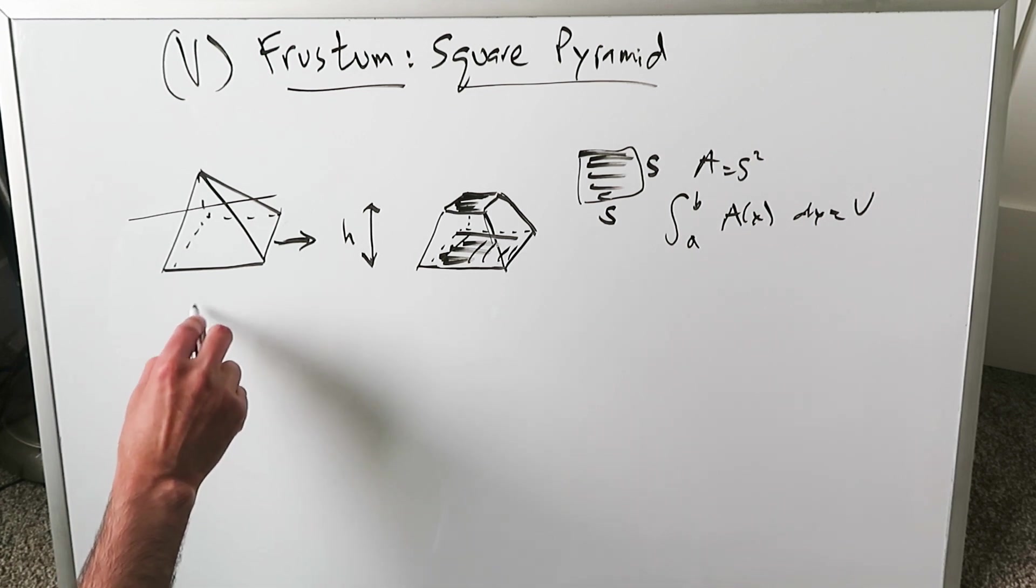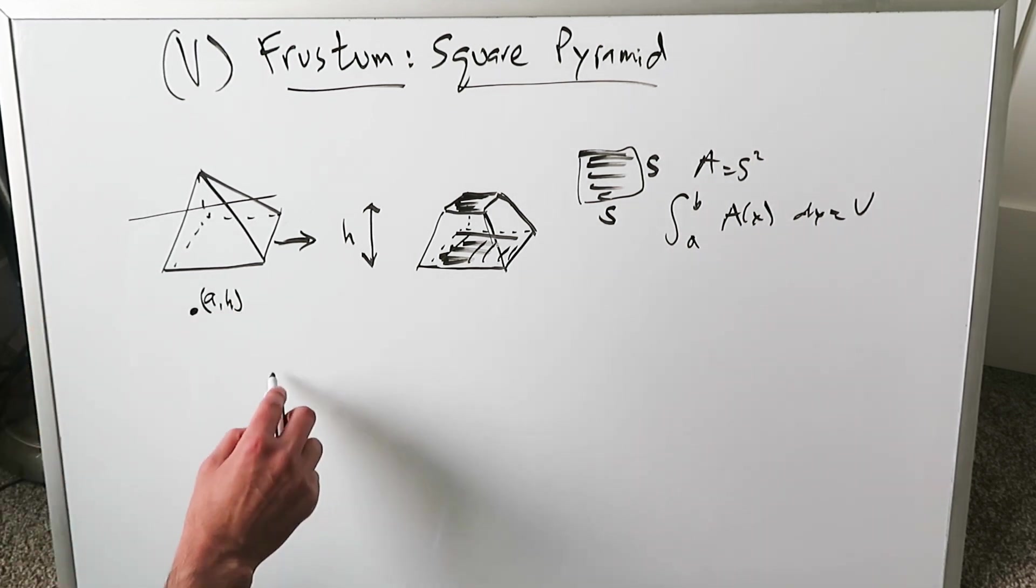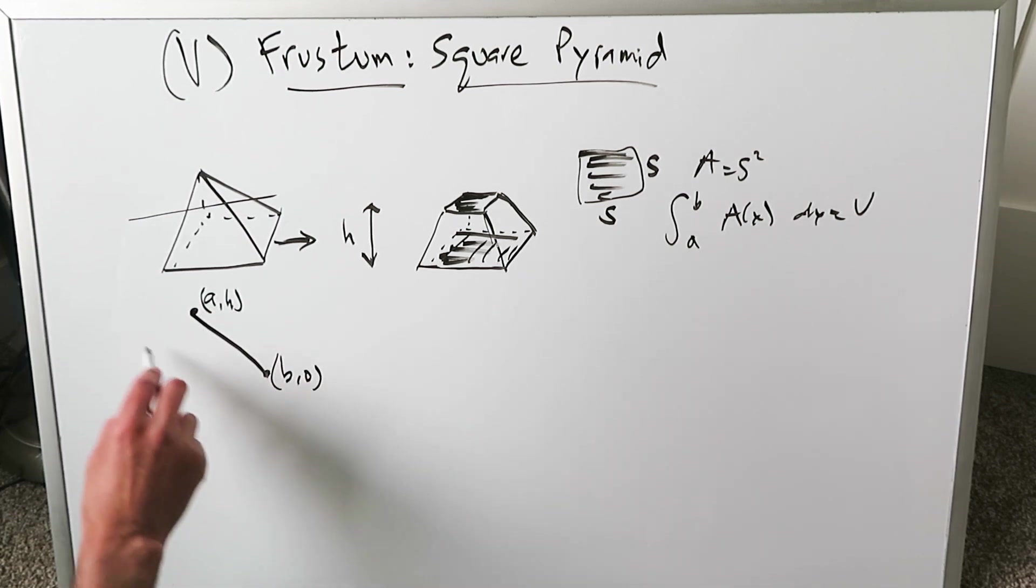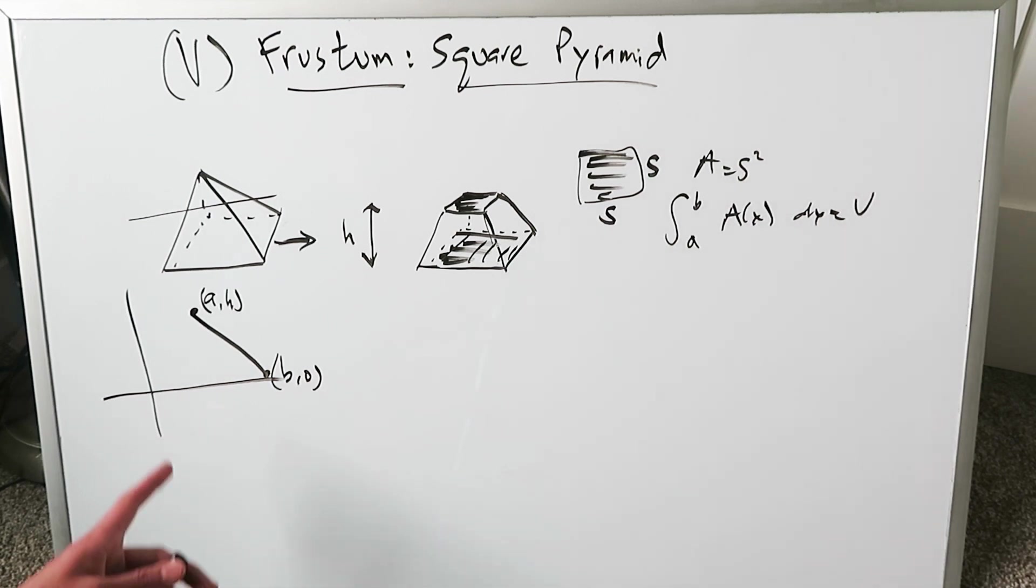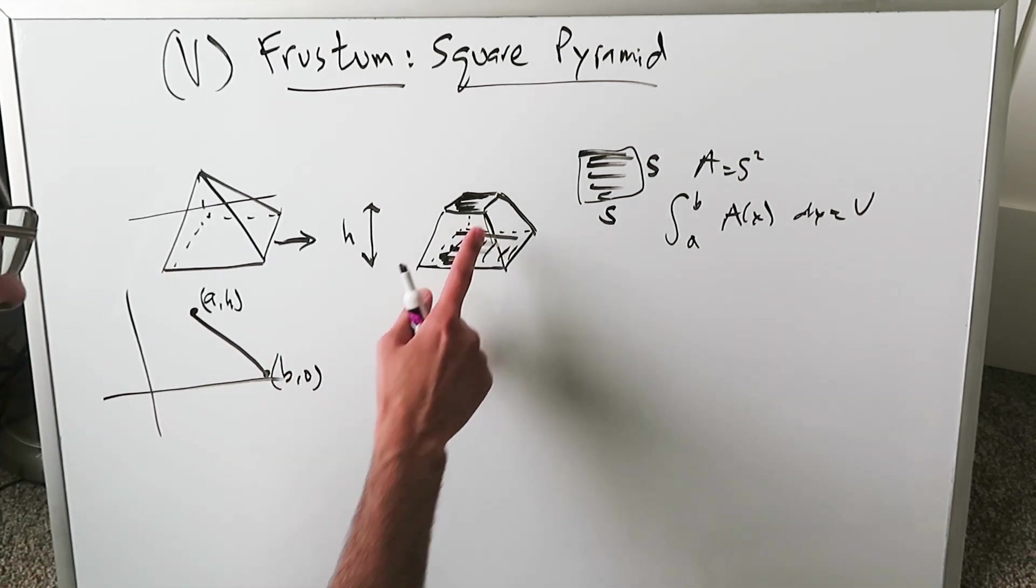You can start with an arbitrary point. We'll call that A, H, because it's a certain height above. And another point, we can call this B, 0. It's a segment you can draw. You can look at everything with regards to an X and Y axis. This represents geometrically what you see.